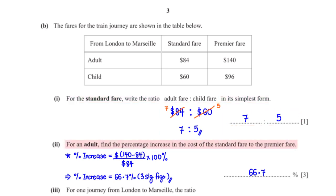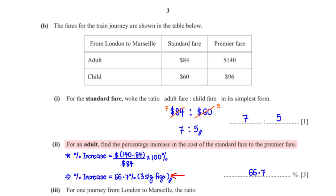For an adult, find the percentage increase in the cost of the standard fare to the premium fare. This equals the adult premium fare ($140) minus the adult standard fare ($84), divided by the adult standard fare, times 100%. When we type this into the calculator, we get 66.7% rounded to three significant figures.